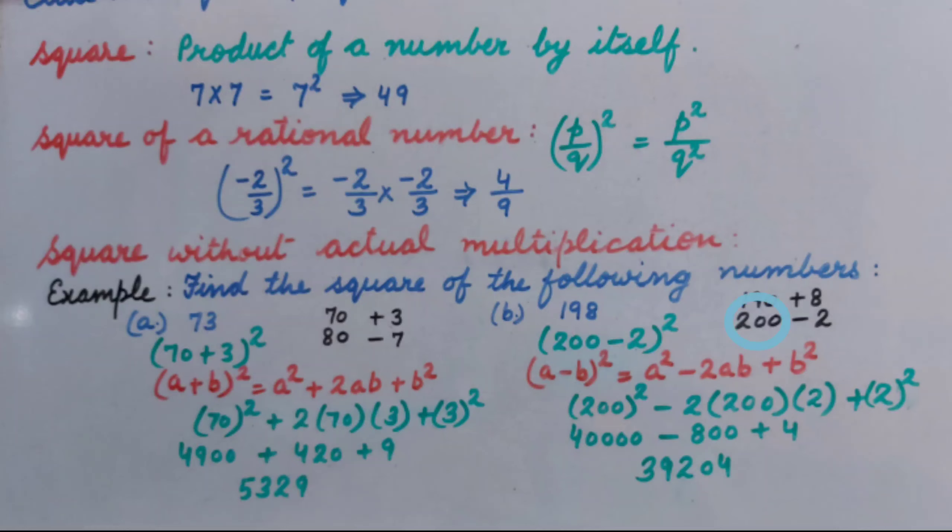Nearest zero ending number is 200. So, we can write 200 minus 2 whole square for 198 square. Here, we have to find the square of difference of two numbers. So, we will use identity A minus B whole square equal to A square minus 2AB plus B square.